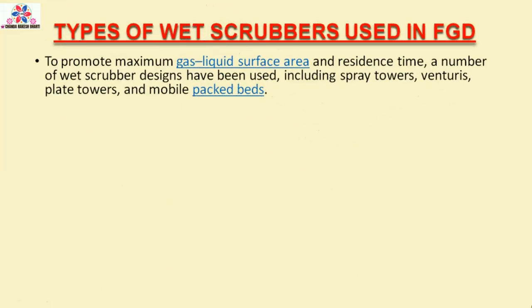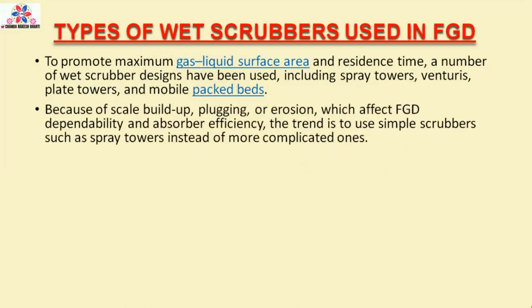Types of Wet Scrubbers Used in FGD: To promote maximum gas-liquid surface area and residence time, a number of wet scrubber designs have been used, including spray towers, venturis, plate towers, and mobile packed beds. Because of scale buildup, plugging, or erosion — which affect FGD dependability and absorber efficiency — the trend is to use simple scrubbers such as spray towers instead of more complicated ones.